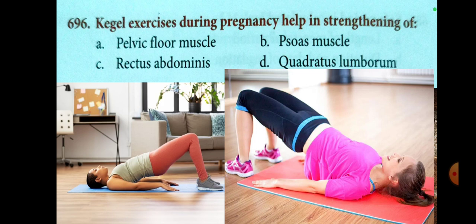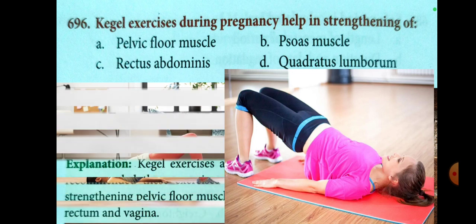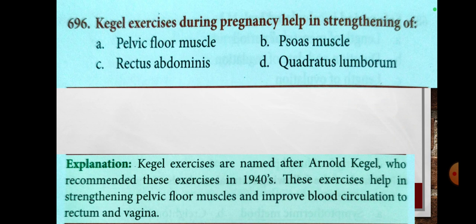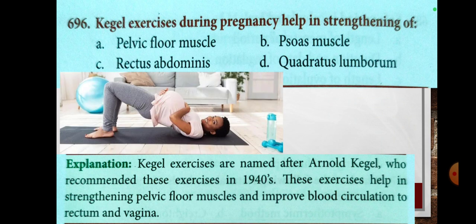Next, Kegel exercises during pregnancy help in strengthening of: option A, pelvic floor muscle; option B, psoas muscle; option C, rectus abdominis; option D, quadratus lumborum. The answer is pelvic floor muscle. Kegel exercises are named after Arnold Kegel who recommended these exercises in the 1940s. These exercises help in strengthening pelvic floor muscles and improve blood circulation to the rectum and vagina.